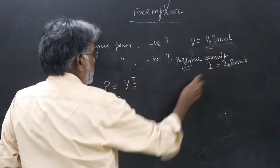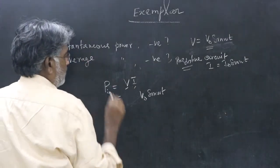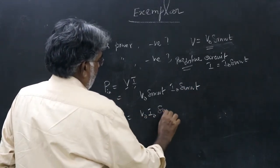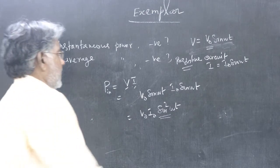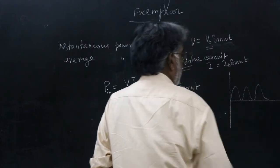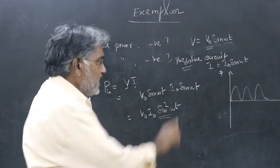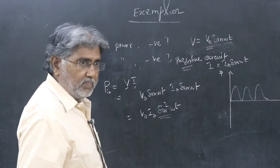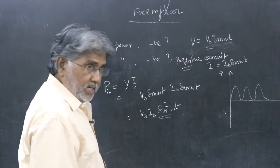Multiply these two: power is V × I = V₀sinωt × I₀sinωt = V₀I₀sin²ωt. If you draw a graph of sin²ωt, the graph will come like this — power versus time. Because it is squared, there is no negative sign. So here you do not have instantaneous power negative because of the sin² term. sin²ωt means power is only positive — there is no negative — provided the AC circuit contains only resistance.